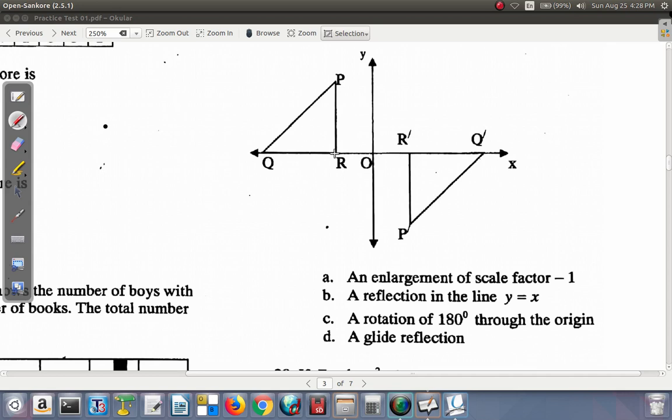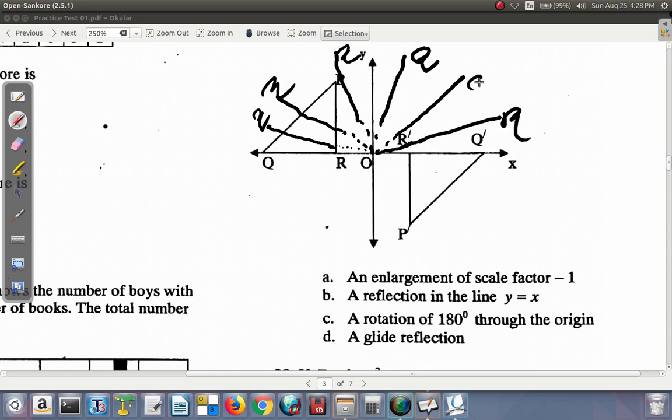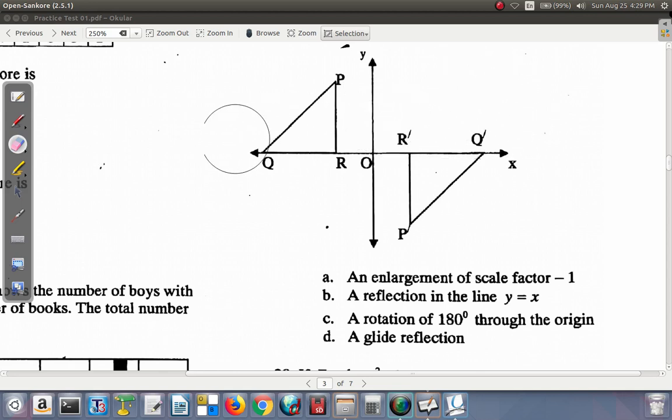180 degrees through the origin. If RQ rotates 180 degrees through the origin, what that would mean is that from the origin, RQ would end up like this. Then Q would be traveling round and round. So Q would end up here, then it would end up here. We're looking at just one side of the triangle for now.